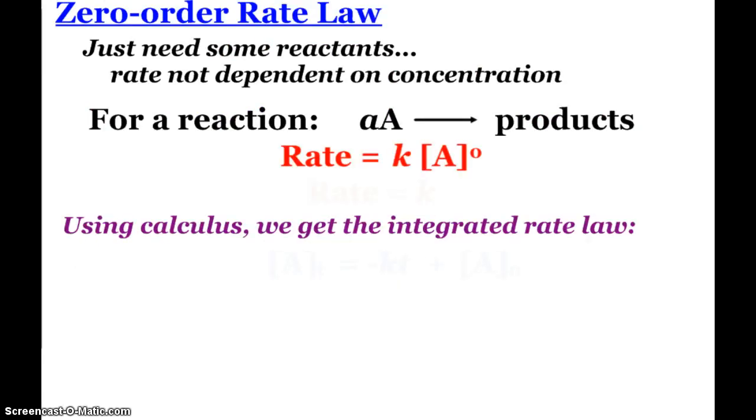For a zero order, you just need some reactants. Again, the rate of the reaction is not dependent on concentration. So the rate is the rate constant times the concentration of A to the zero power, which in math we know anything to the zero power is 1, so essentially the rate equals the rate constant. So the integrated rate law is as such: the concentration at time t equals negative kt plus the initial concentration. This equation is not on the AP formula sheet, so I doubt they're going to ask you for a plug-and-chug type question, math question, but they could ask you, here's a zero order reaction, what happens to the rate when we change the concentration of the reactant? And you would say nothing because it's not dependent on concentration.